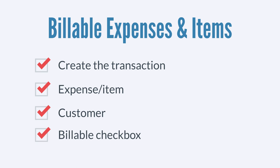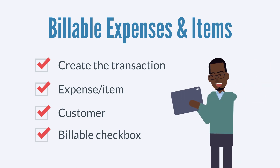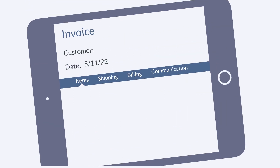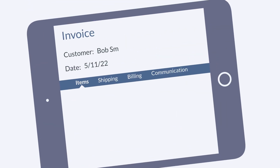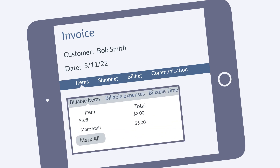Once you have created a billable expense or billable item, it can be selected on invoices. After you create an invoice and select the customer this invoice applies to, any expenses or items that are connected with that customer will appear under the Billable Expenses and Billable Items sub-tabs.